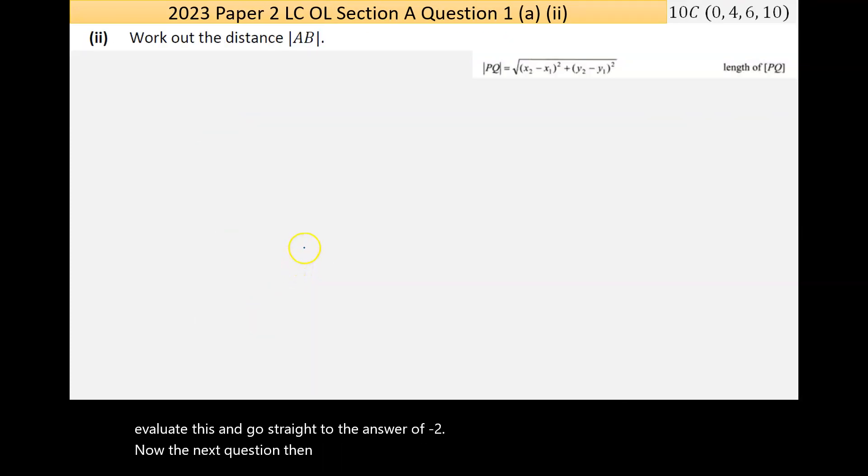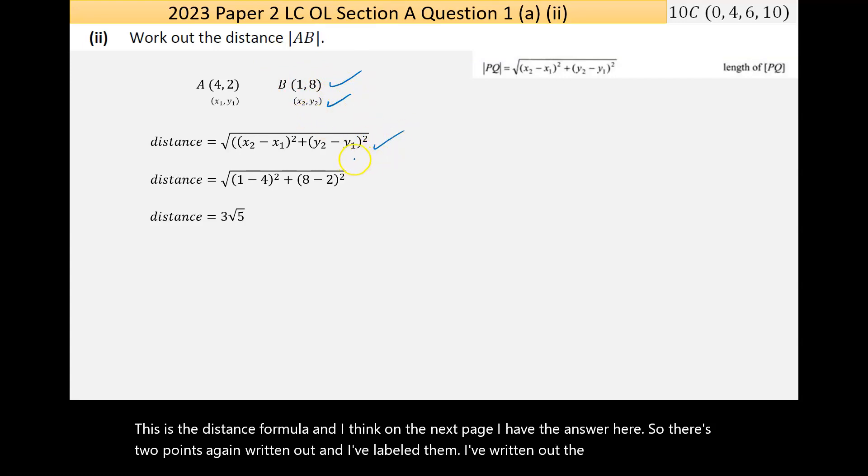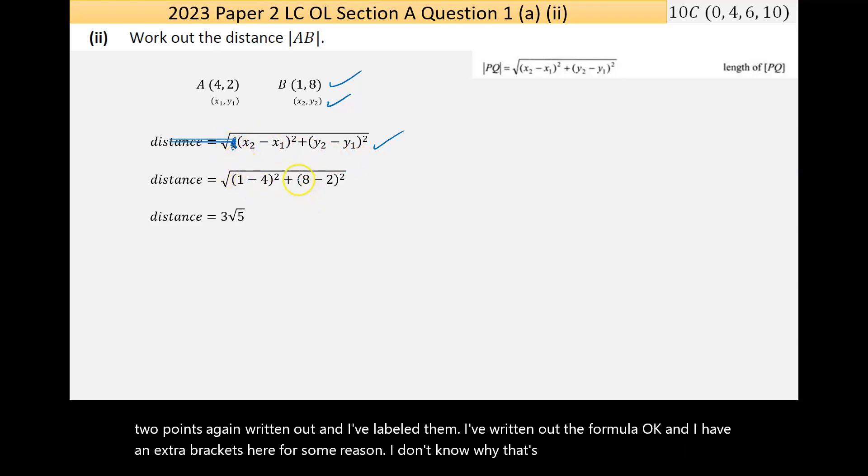The next question then is on the distance between A and B. Again, I put the formula in - this is the distance formula. On the next page I have the answer. There's the two points again written out and I've labeled them, I've written out the formula.